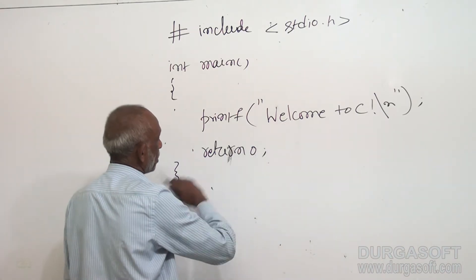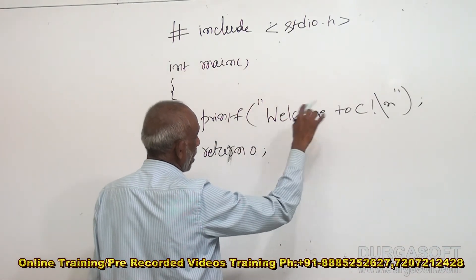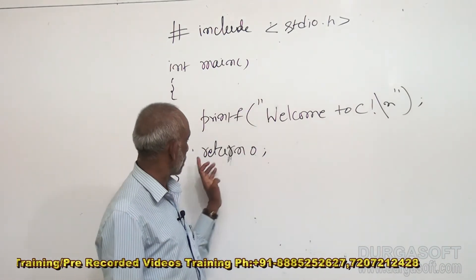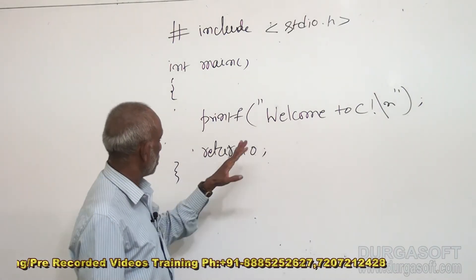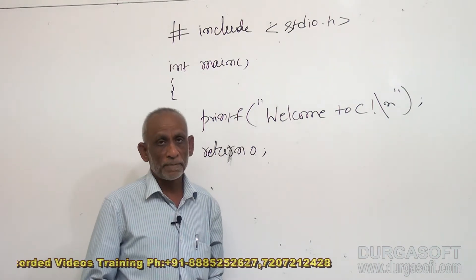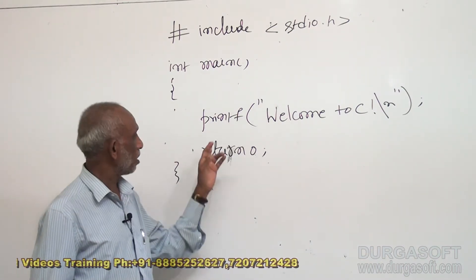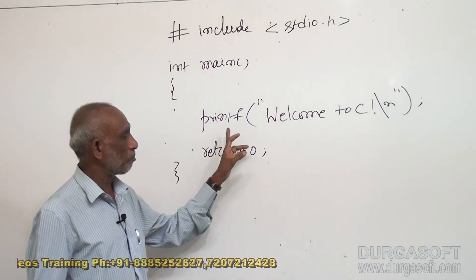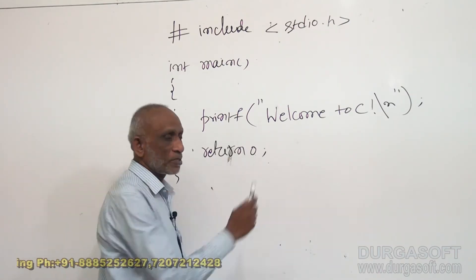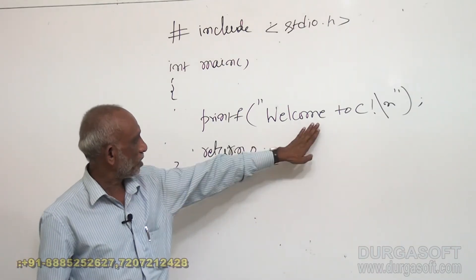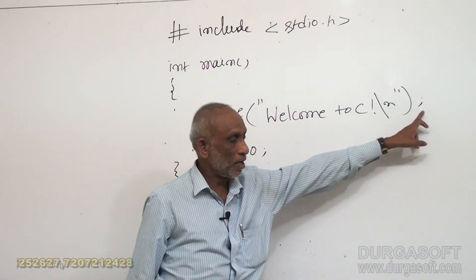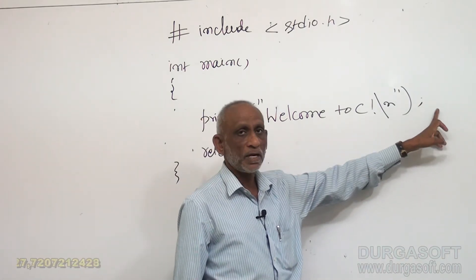Let us see the first statement: printf with brackets, double quotes, welcome to C. The second statement is return 0. Printf means this is a function used to display a message on screen - that is the printf function. This is a built-in function already available in the C language. Whatever message you want to display on the screen, we specify it here in double quotes. And at the end of the statement there is a semicolon. Every C language statement is terminated by a semicolon.